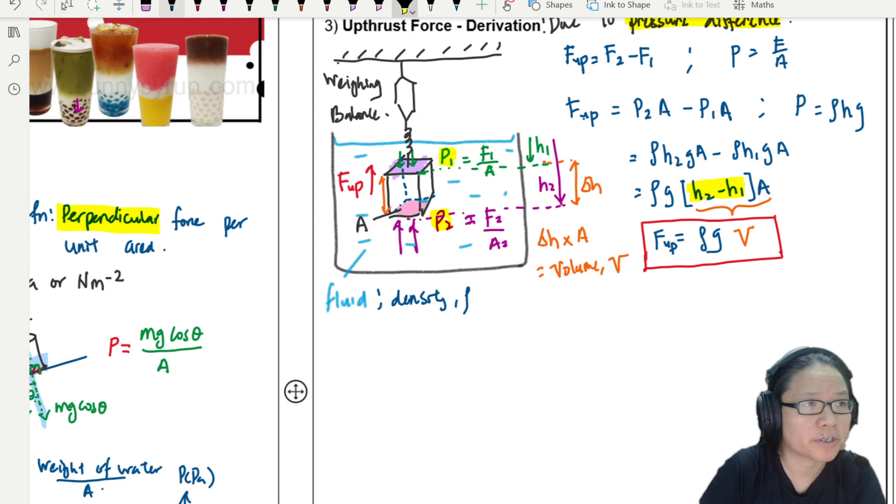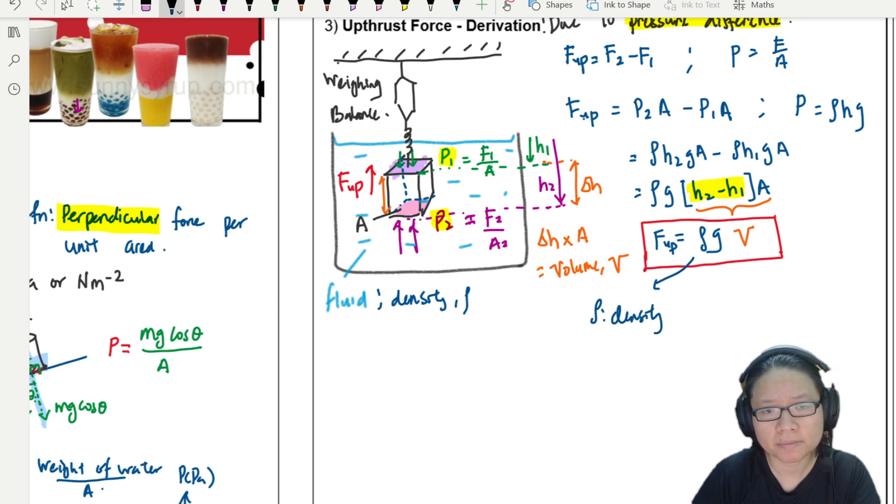Let us define the terms first. This density is density of the fluid, can be air or liquid, that the object is submerged in. And then this volume is the volume of the liquid or the fluid displaced.